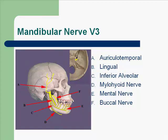Here are the branches we will be talking about: the auriculotemporal, the lingual, the inferior alveolar (also known as the IA), the mylohyoid nerve, the mental nerve, and the buccal nerve.